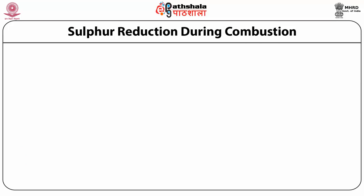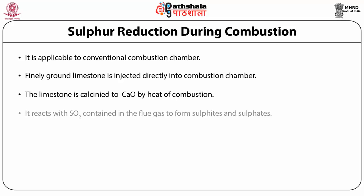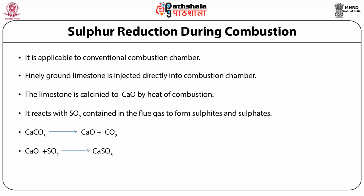Sulfur reduction during combustion is applicable to conventional combustion chambers. Finely ground limestone is injected directly into the combustion chamber, where it is calcined to calcium oxide by the heat of combustion. It then reacts with sulfur oxides in the flue gas to form sulfides and sulfates. The reaction is: CaCO₃ → CaO + CO₂; then CaO + SO₂ → CaSO₃, and CaO + SO₂ + ½O₂ → CaSO₄.